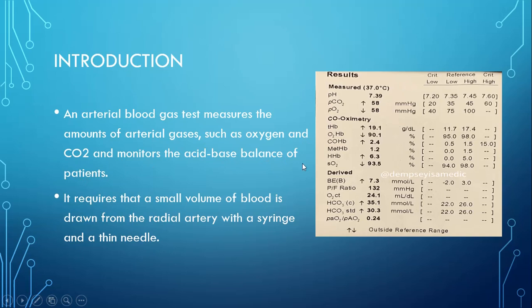This is a normal ABG showing a result of an ABG — this is how it appears. It requires a small amount of blood which is drawn from the radial artery with a syringe and a thin needle.